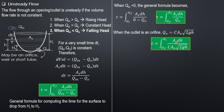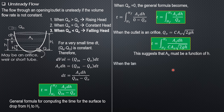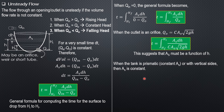This formula requires that area S be a function of head, related to H by geometric means, so that the integral can be evaluated. When area S is constant — for prismatic tanks, which may have a circular section or any section as long as the sides are vertical — then area S is constant.